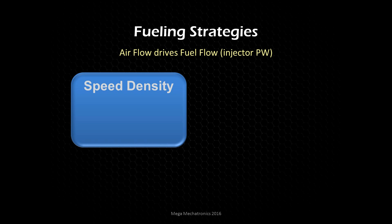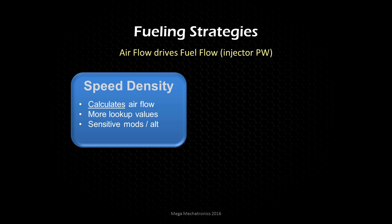The first type is called speed density, where we calculate airflow based on several different inputs in a bunch of lookup tables. At minimum we need RPM, throttle position, manifold absolute pressure, and intake air temperature — and there could be other inputs to further optimize the airflow estimates. This type of tuning is sensitive to mild and major modifications, requiring you to retune the speed density or volumetric efficiency table. Changes in altitude will also affect the tune more significantly than other methods.